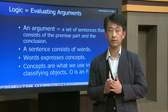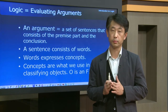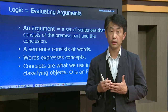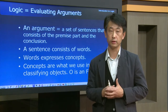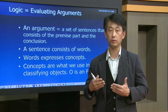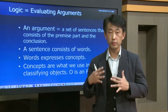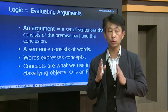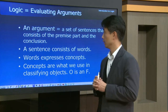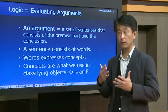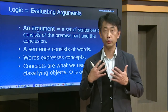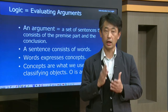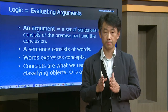An argument must be divided into two parts. Premises are the reasons, the ground, or the evidence that you take to support the conclusion of the argument. The conclusion is your belief or the claim, and the premises are what you take to support it. Every argument must have those two parts in it. What is important for today's class is that an argument consists of sentences.